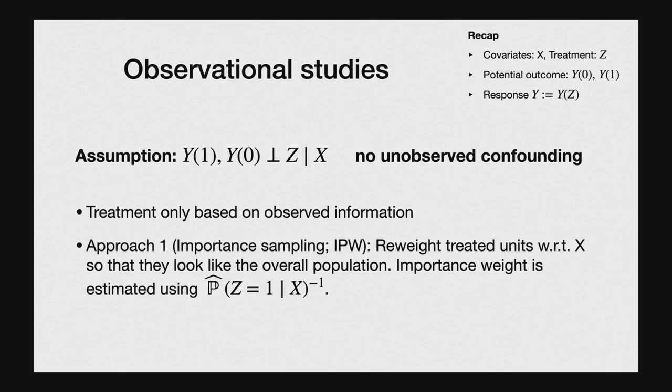For observational studies, there is a key mathematical assumption that still allows us to uncover the causal effect: the no unobserved confounding condition. This simply says that the potential outcomes are independent of the treatment assignment if you condition on X. In words, this means that doctors prescribing medicine have access to the same information X that you as the analyst have, and if you condition on it, their decisions are as good as random — they're not prescient. It's a very strong assumption that's frequently violated.